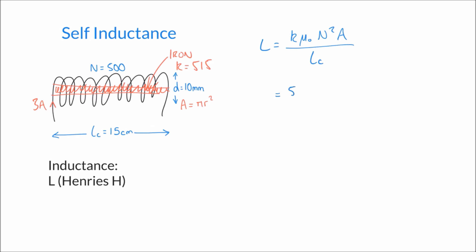Using the same formula: k is 515, multiplied by mu-naught which is 1.257 times 10 to the minus 6, multiplied by N squared which is 500 squared, multiplied by the area which is pi times the radius 0.005 squared, all over the coil length 0.15 metres.